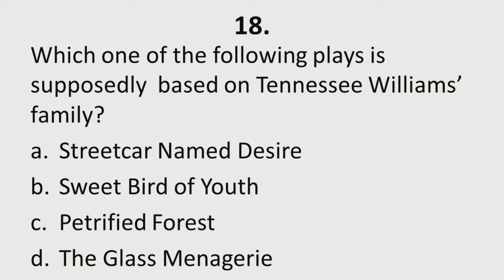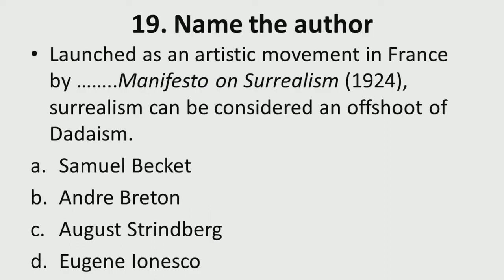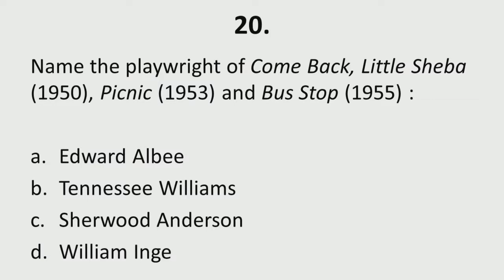Question 18: Which one of the following plays is supposedly based on Tennessee Williams' family? A. A Streetcar Named Desire, B. Sweet Bird of Youth, C. Petrified Forest, D. The Glass Menagerie. Question 19: Name the author — launched as an artistic movement in France, who wrote the Manifesto on Surrealism in 1924. Surrealism can be considered an offshoot of Dadaism. A. Samuel Beckett, B. André Breton, C. August Strindberg, D. Eugene Ionesco. Question 20: Name the playwright of Come Back, Little Sheba, Picnic, and Bus Stop — great plays of the 50s. A. Edward Albee, B. Tennessee Williams, C. Sherwood Anderson, D. William Inge.